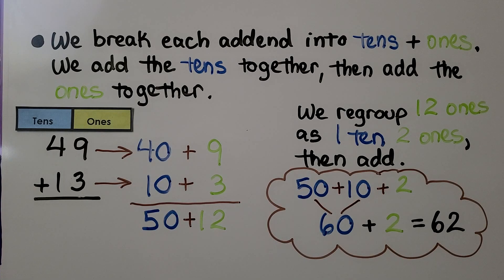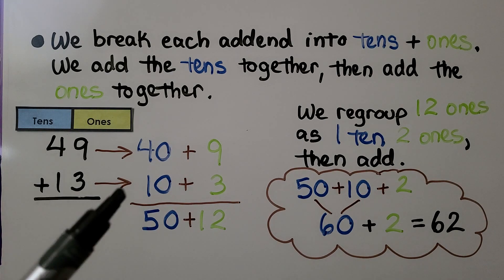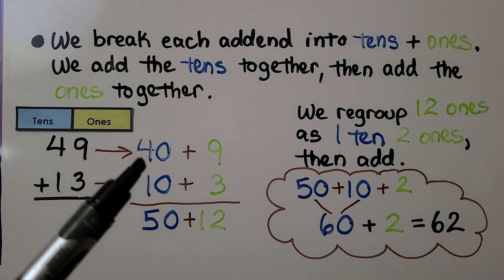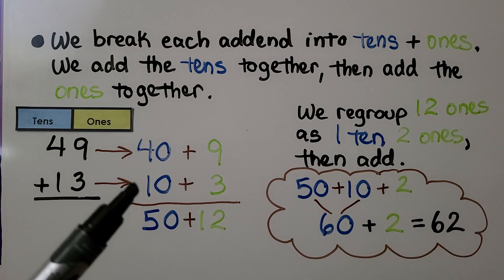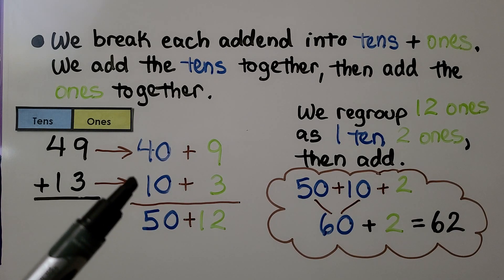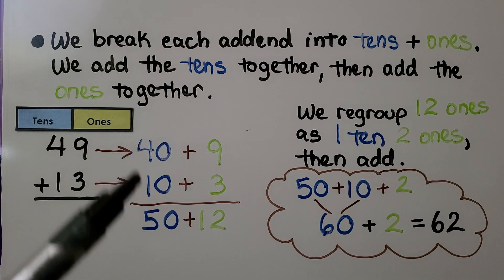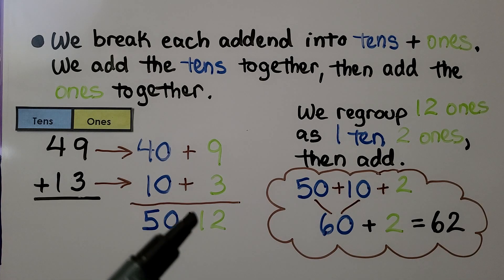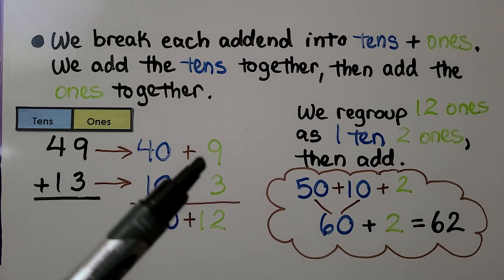We break each addend into tens and ones, then add the tens together and add the ones together. For 49 plus 13: 49 can be written as 40 plus 9, and 13 can be written as 10 plus 3. We add the tens: 40 plus 10 is 50.